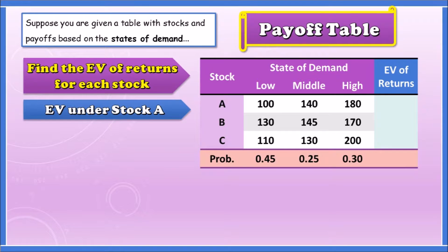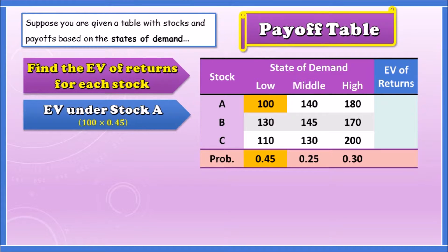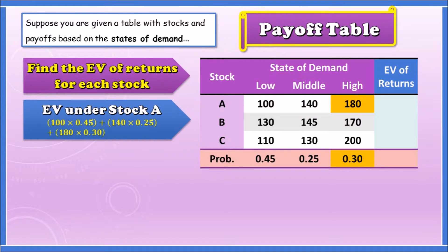For Stock A, we multiply: 100 times 0.45, plus 140 times 0.25, plus 180 times 0.30. This gives us an expected return of 134.